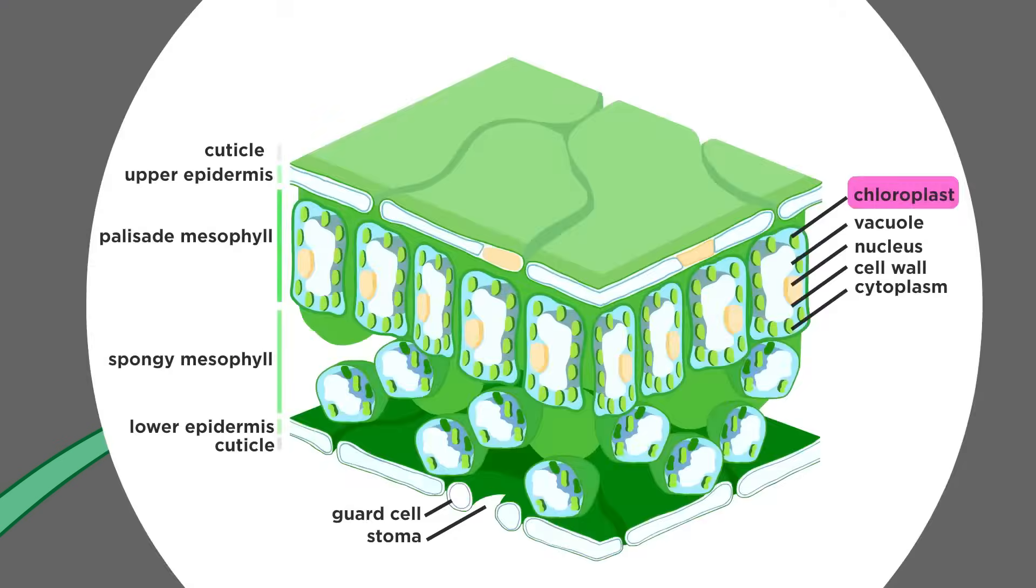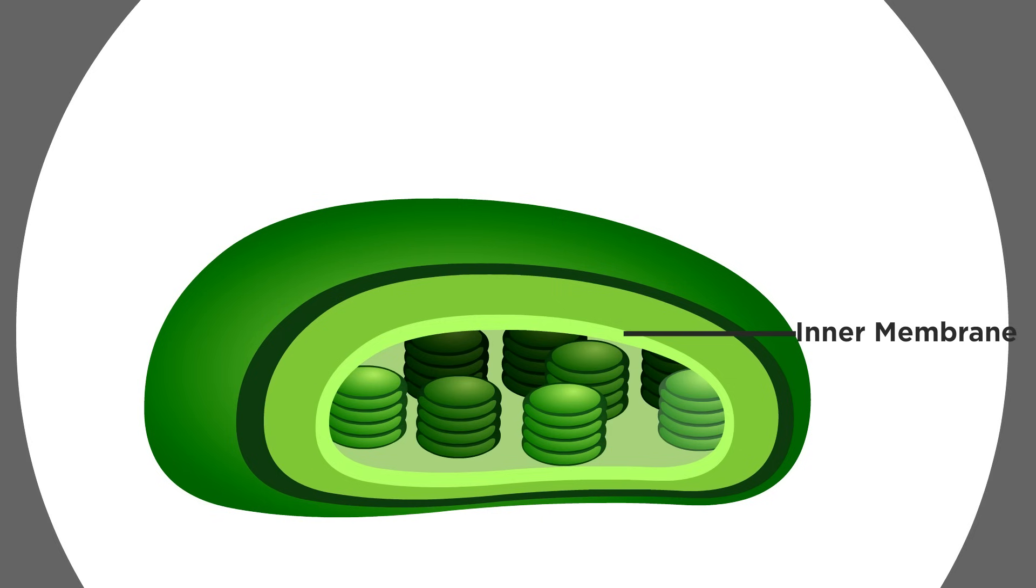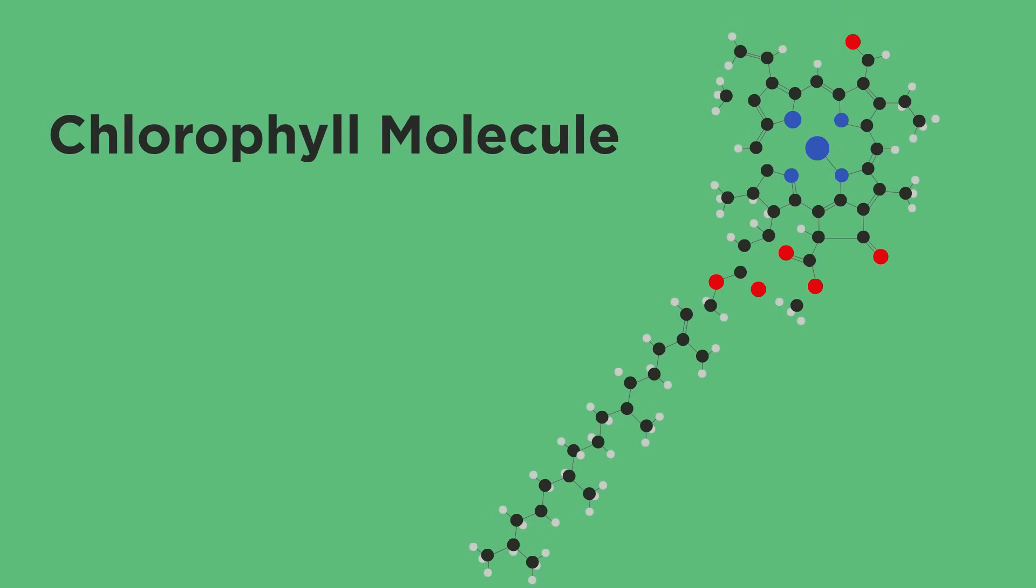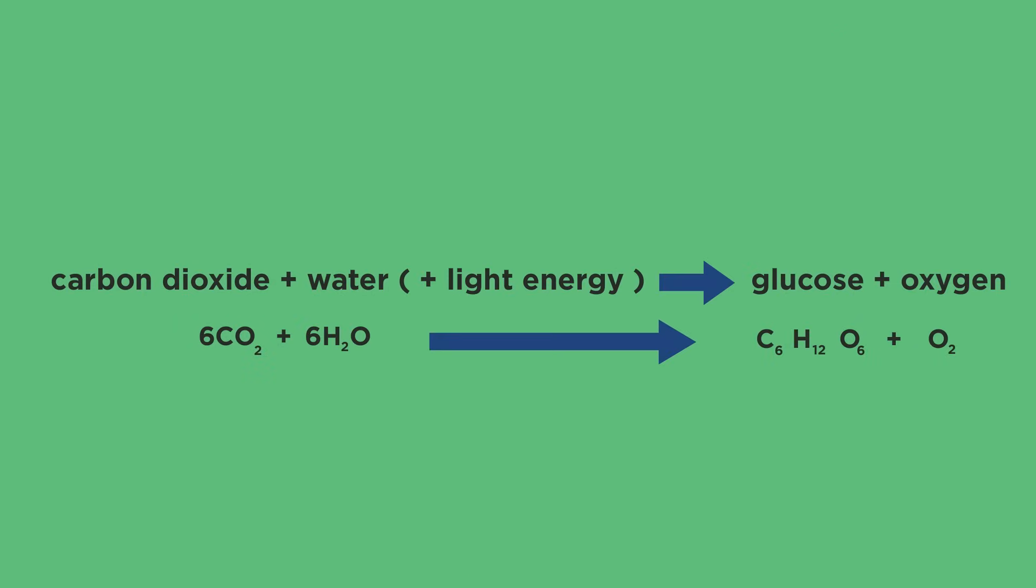Photosynthesis happens in leaf cells. They contain tiny organelles called chloroplasts, which contain a green substance called chlorophyll. Chlorophyll molecules sit on the surface of the chloroplasts and capture light energy from the sun, which is fundamental for photosynthesis.